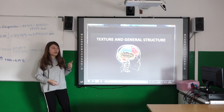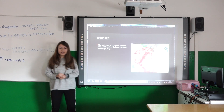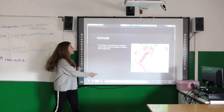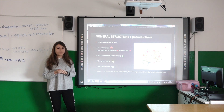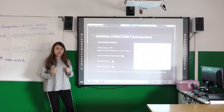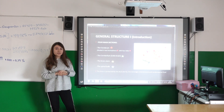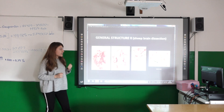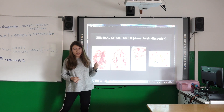First of all, let's start with the texture and the general structure. The brain is smooth and spongy and it looks like jelly, as you can see in this photo. It is divided into four main sections: the cerebrum, the cerebellum, the brain stem, and the spinal cord. The brain is covered by the skull, which is made up of bone, the meninges, and is protected by the cerebrospinal fluid. Here you can see the different photos of my brain showing the structure.